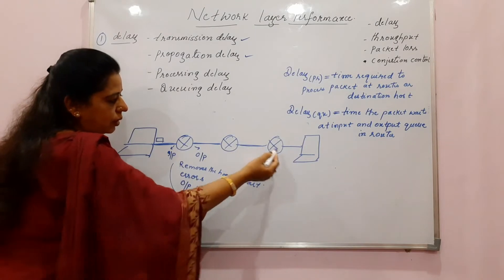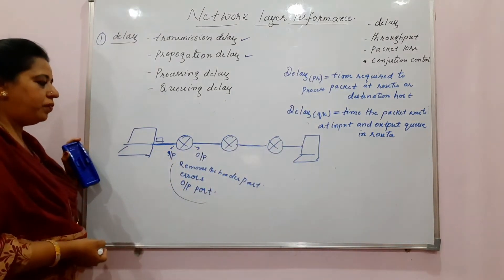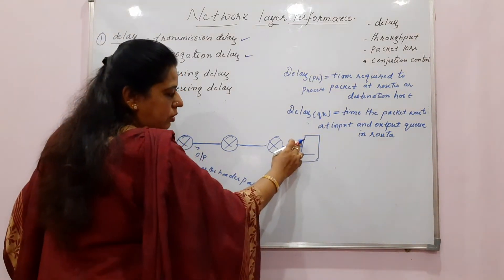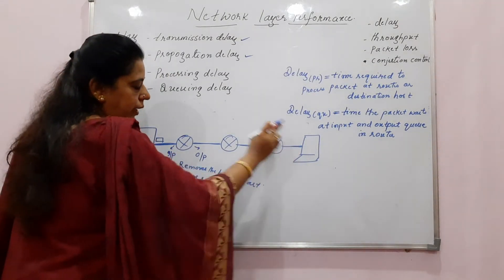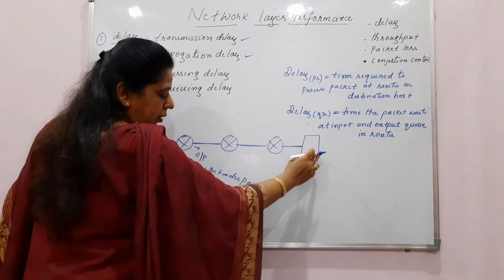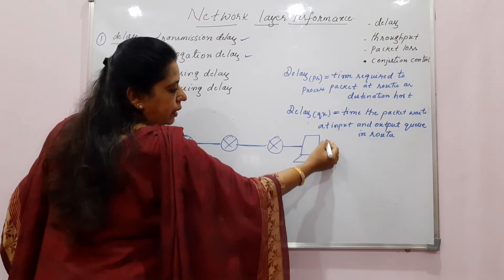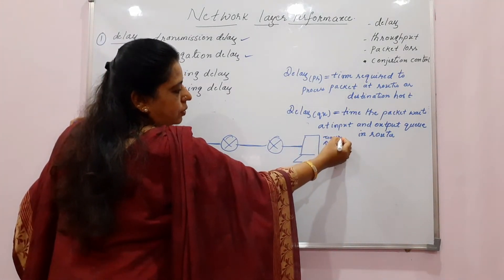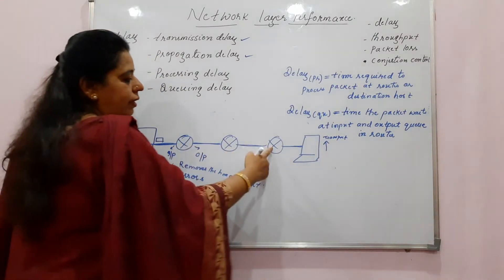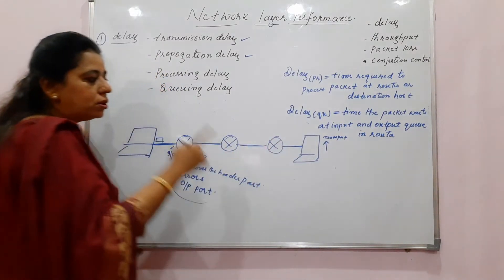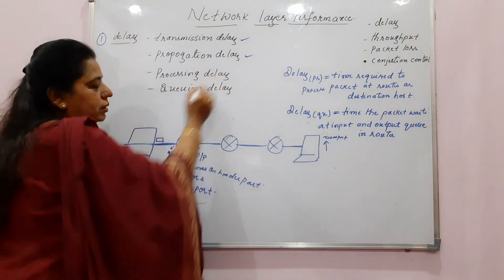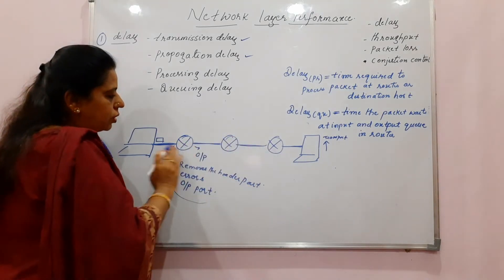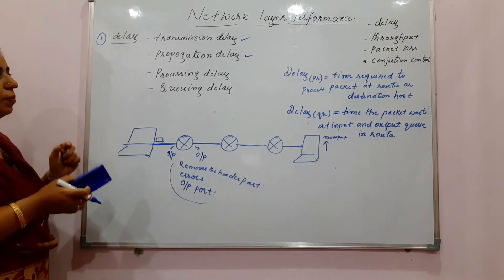Each router performs these processing functions. The destination receiver also receives the packet, removes the header, checks for errors, and sends the packet to the higher layer — the transport layer. So not only routers but also the destination host contributes toward processing delay.